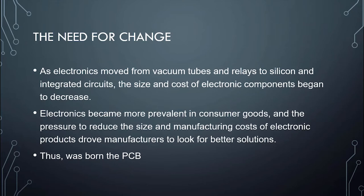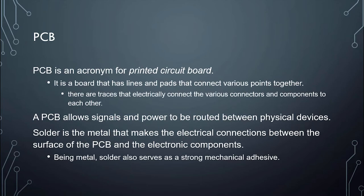Wiring, while very useful, is not perfect and this needed to change. Electronics moved first to vacuum tubes and relays, but then silicon transistors and integrated circuits arrived. The size and cost of electronic components began to go down, and electronics became more of a consumer good. Size and manufacturing costs drove manufacturers to better solutions — this is where the PCB really entered its own. PCB stands for printed circuit board.